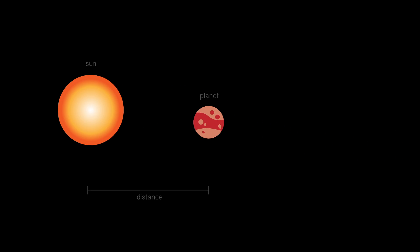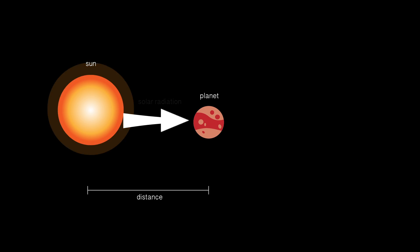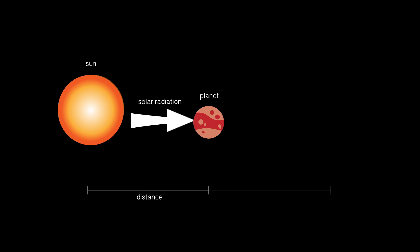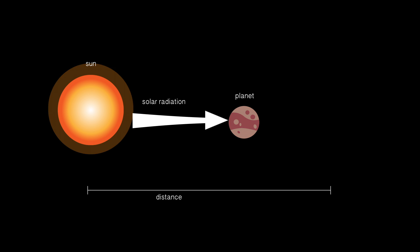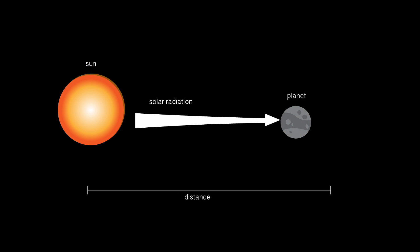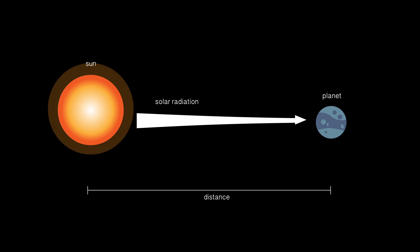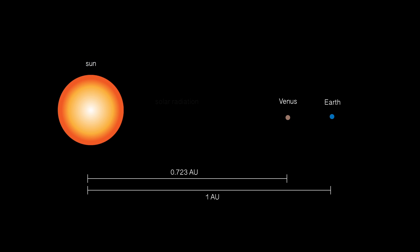So what happened next? One theory says the evolution of Earth and Venus depended on the planet's distance from the Sun. The intensity of radiation from the Sun hitting a planet's surface decreases as distance increases, meaning that a planet's surface temperature will be cooler when it is further from the Sun.